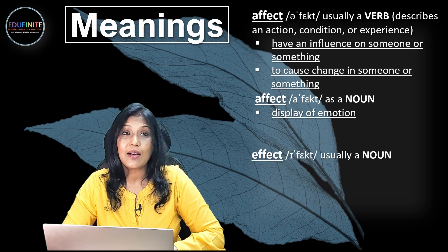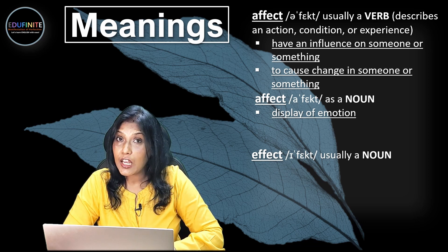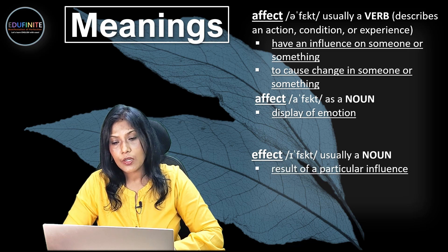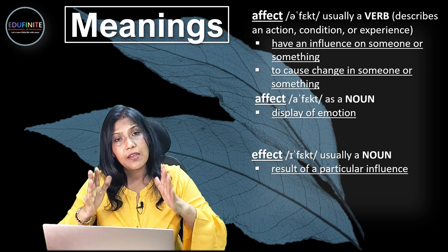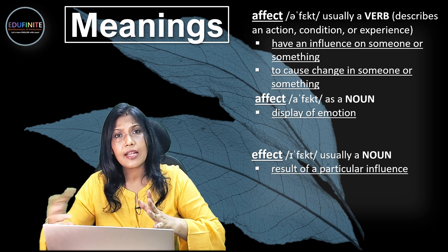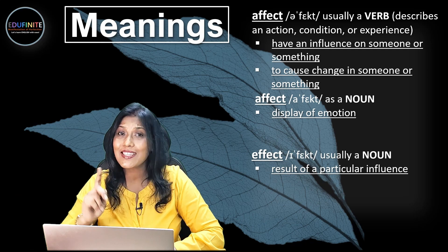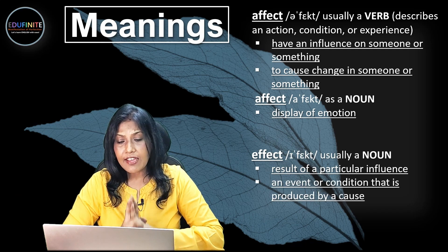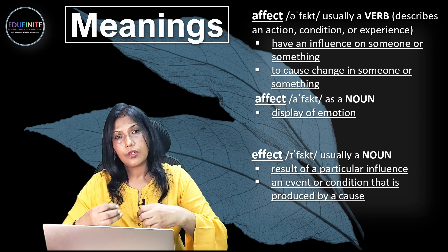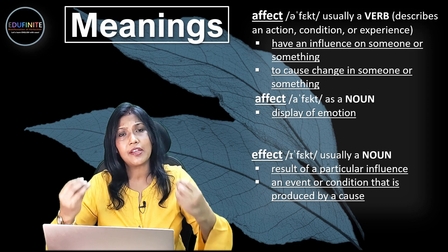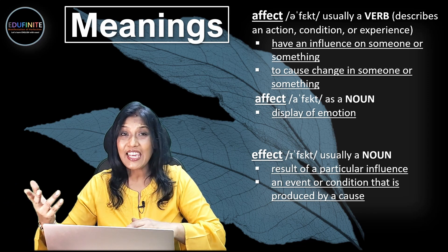Next, we come to EFFECT, which is usually used as a noun. It means the result of a particular influence — something has happened and because of that, there is some result or outcome. So, the outcome is the EFFECT. It can also be described as an event or condition produced by a cause; for example, an earthquake happens, and the EFFECT it has on the people there — that's the EFFECT.